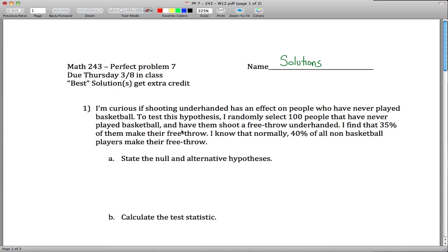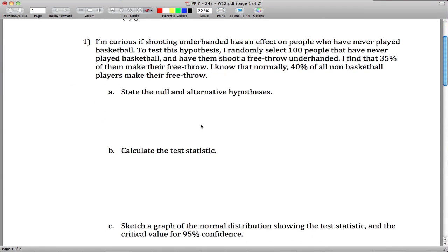Here are solutions to perfect problem 7 for Math 111. I'm curious if shooting underhand has an effect on people. Effect will be important. This word here is important. This tells us that it will be a two-tailed test who have never played basketball.